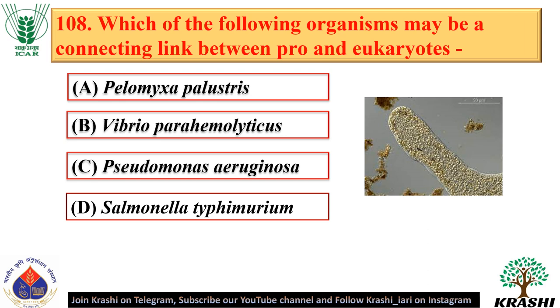Question number 108. Pilumixa palustris may be a connecting link between prokaryotes and eukaryotes — option A.